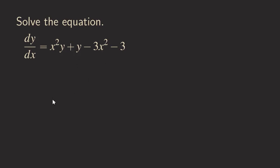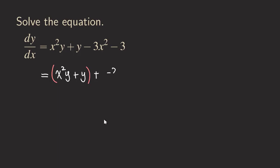We are going to start by writing the x squared y and then plus y. We are going to group the first two terms together. And then for the last two terms, the third term and the fourth term, we also need to group them together. So we have plus, and then negative three x squared minus three.